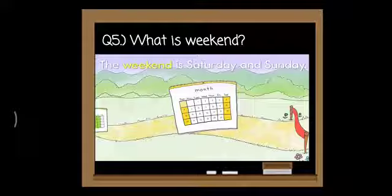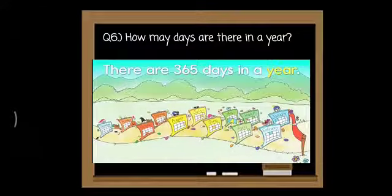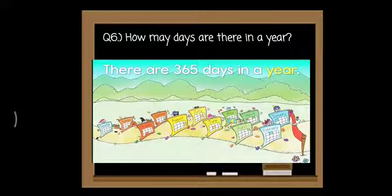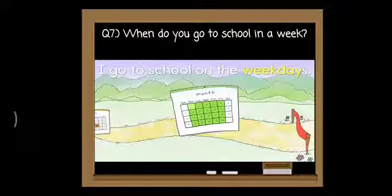What is a weekend? The weekend is Saturday and Sunday. How many days are there in a year? In a whole year, how many days are there? There are three hundred and sixty-five days in a year. When do you go to school in a week? I go to school on the weekdays. Weekdays are Monday, Tuesday, Wednesday, Thursday, and Friday. Saturday and Sunday is a holiday — that is the weekend.